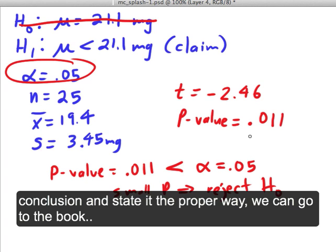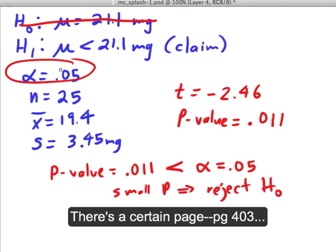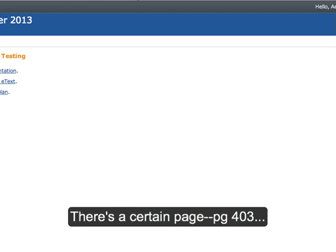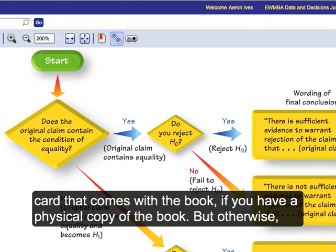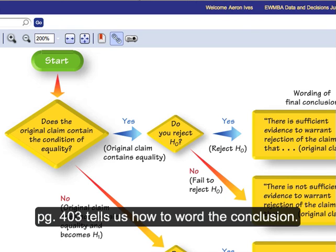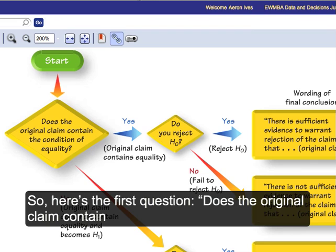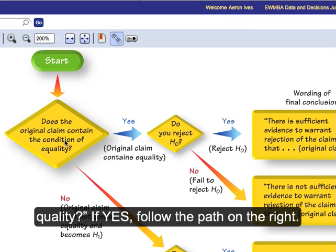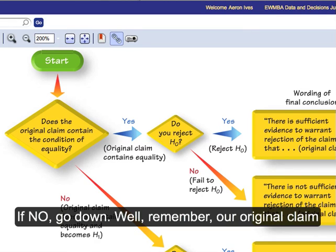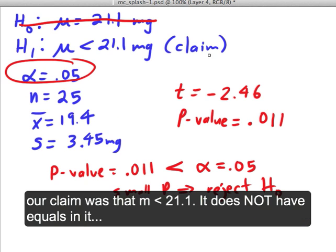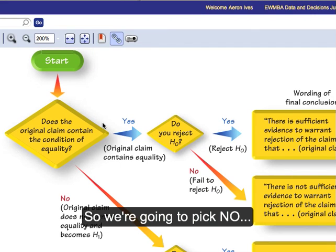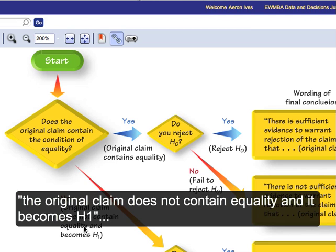So we reject H0. Now, to make our final conclusion and state it the proper way, we can go to the book, and there's a certain page. You can go to page 403. You can also go to the fold-out card that comes with the book, if you have a physical copy of the book. But otherwise, page 403 tells us how to word the conclusion. So here's the first question. Does the original claim contain equality? If yes, you follow the path on the right. If no, go down. Well remember, our original claim, which we circled over here, put in parentheses claim. Our claim was that mu is less than. It does not have equals in it. So we're going to pick no. The original claim does not contain equality, and it becomes H1.